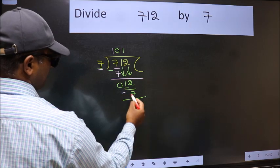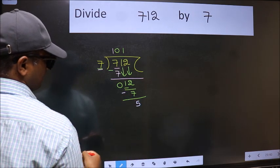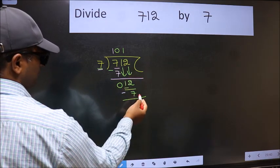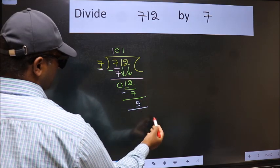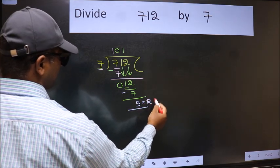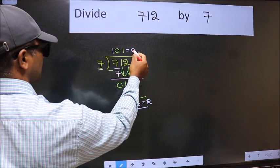Now we should subtract. We get 5. No more numbers to bring it down. So we stop here. This is our remainder and this is our quotient.